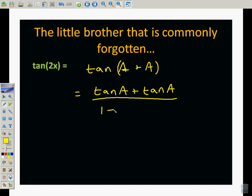And our formula is going to end up looking something like this. When we simplify this, we get 2 tangent of A over 1 minus tangent squared of A. So this is our tangent formula.